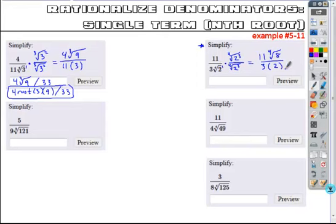The root and the power cancel leaving just the base 2. And again, the whole point of this, choosing to use this strategy, you'll always be left with just this base. Between 11 and then 3 times 2, no common factor, so I get 11 times the 4th root of 8 divided by 6.